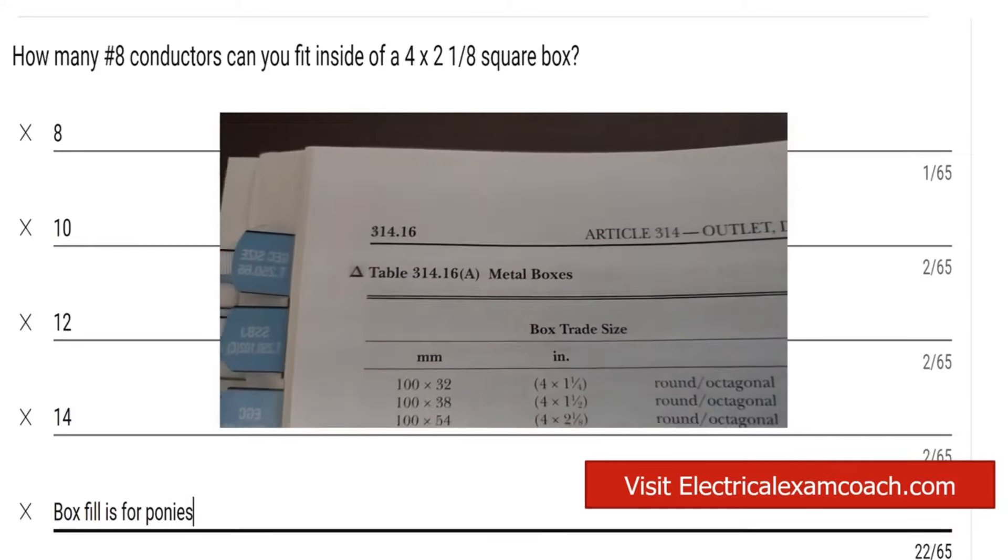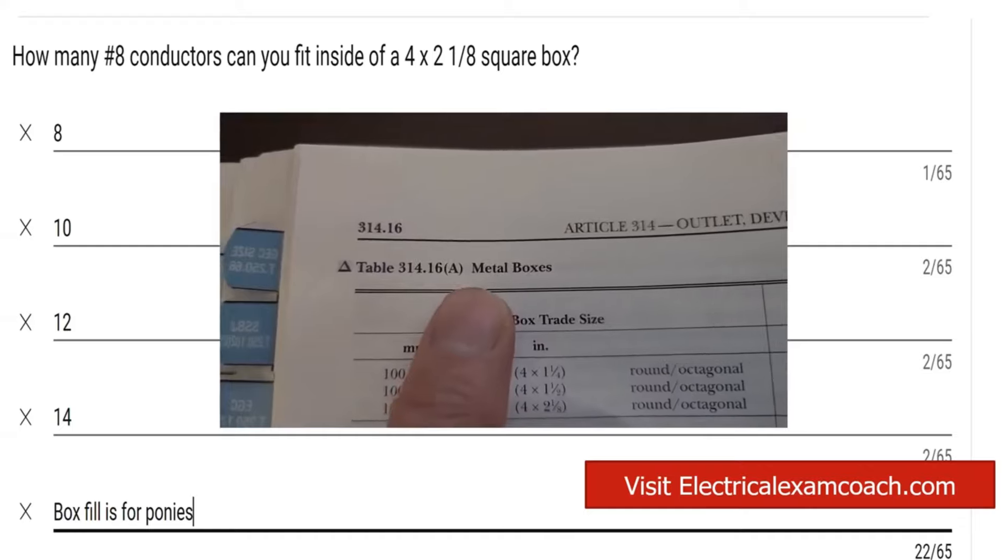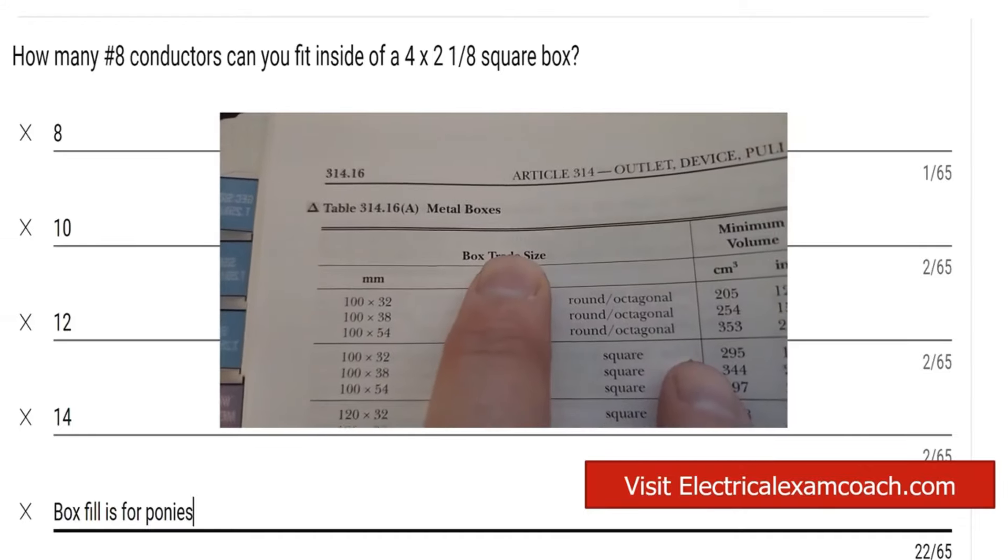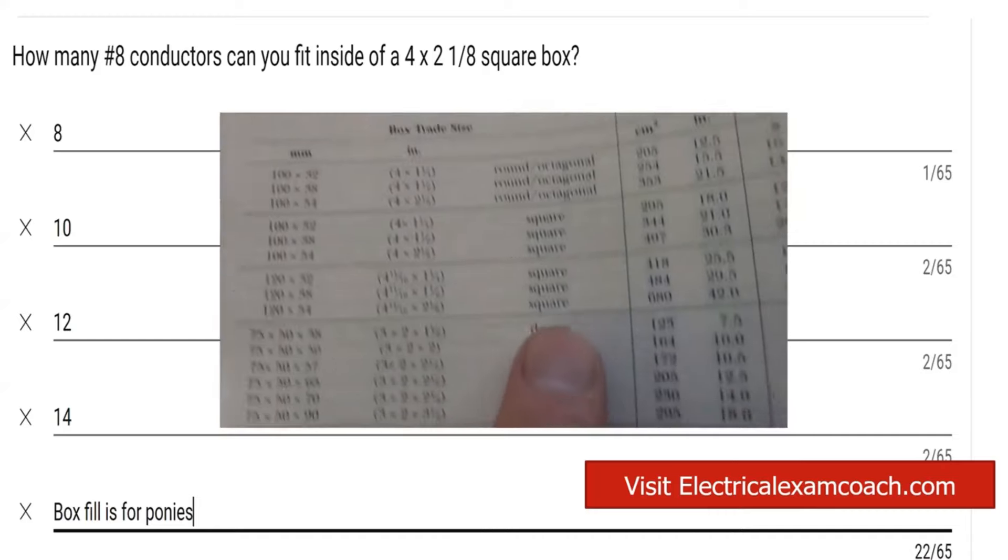All right, y'all. So this one's pretty easy. We're going to head to 314.16A. We're going to start with our box trade size and come down and find our type of box.